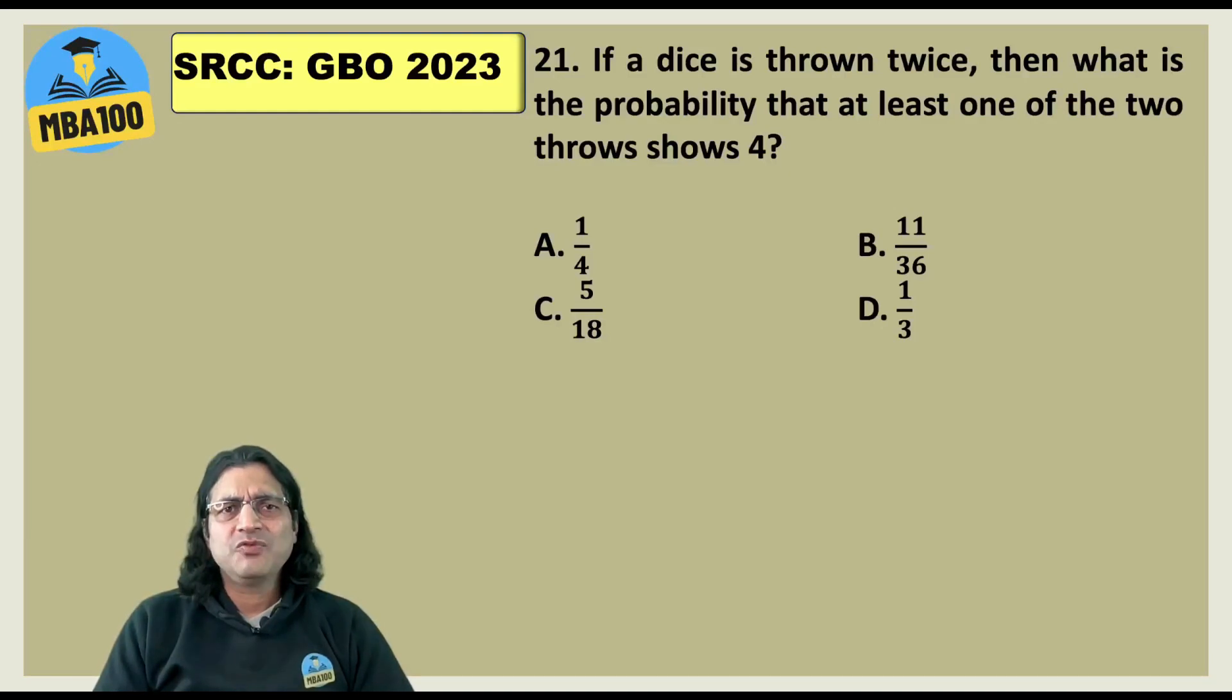Simple one. 1 minus 5 by 6 into 5 by 6. So 1 minus 25 by 36 will give you 11 by 36. That's the answer.